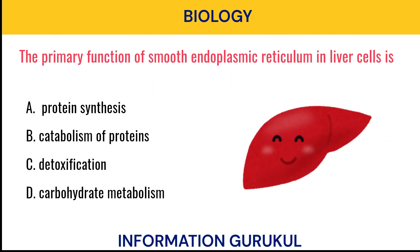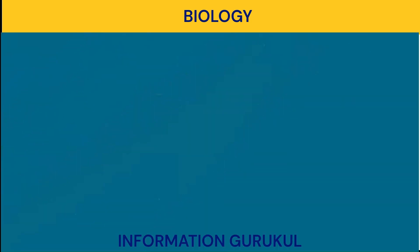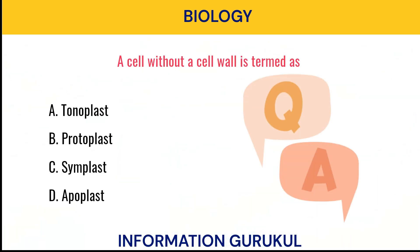The primary function of smooth endoplasmic reticulum in liver cells is? Detoxification. A cell without a cell wall is termed as? Protoplast.